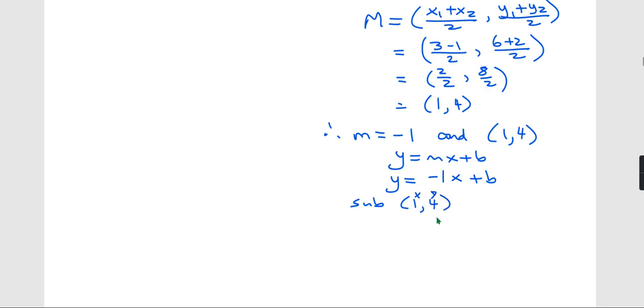Then I'm going to substitute in this point. This is my x, and this is my y. I know that I can put this point in because it's on the line, which means it makes the equation true.